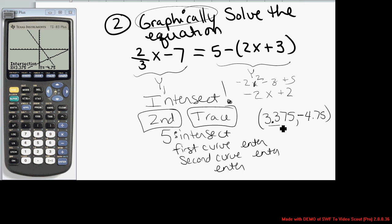This means when x is 3.375, that will produce a y value of negative 4.75. That will be the y value for y1 and the y value for y2. So the solution to this equation, the x value that makes the left side equal the right side, is x equals 3.375.